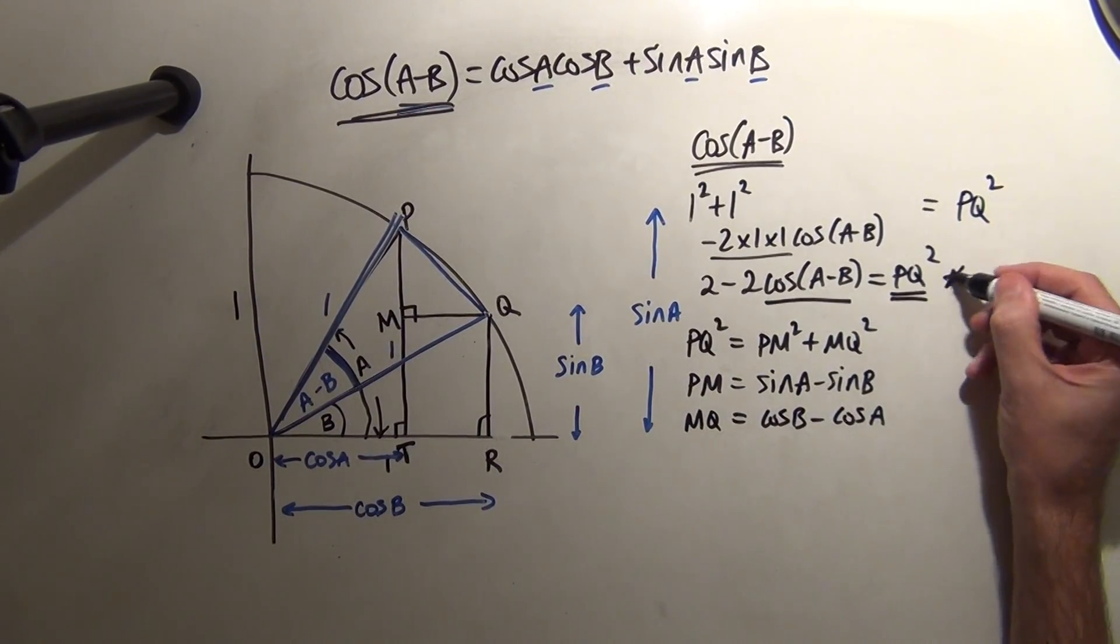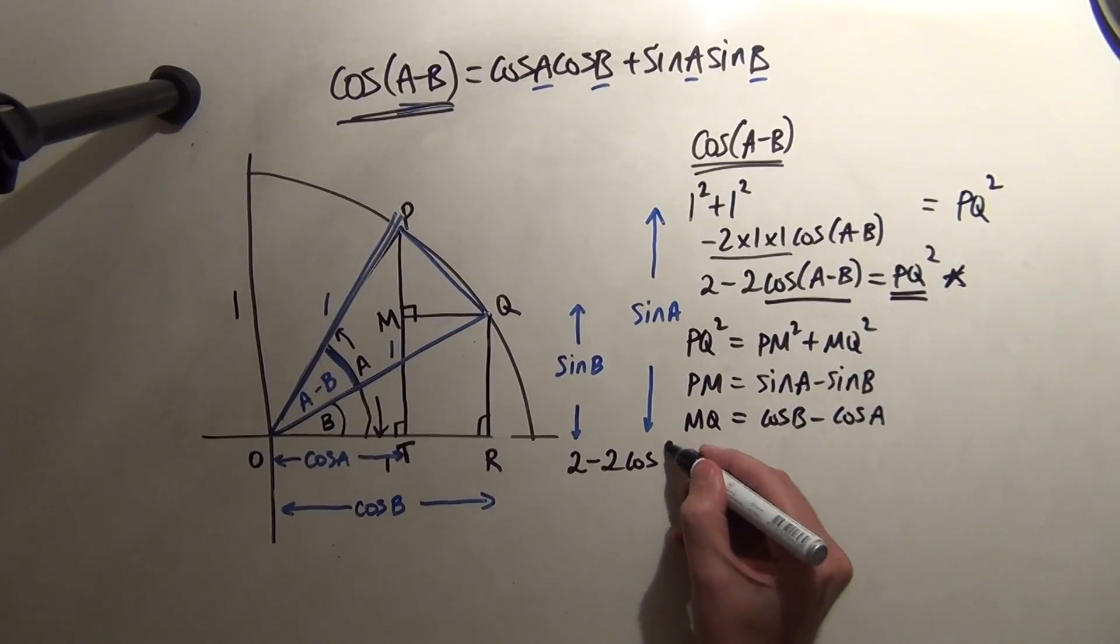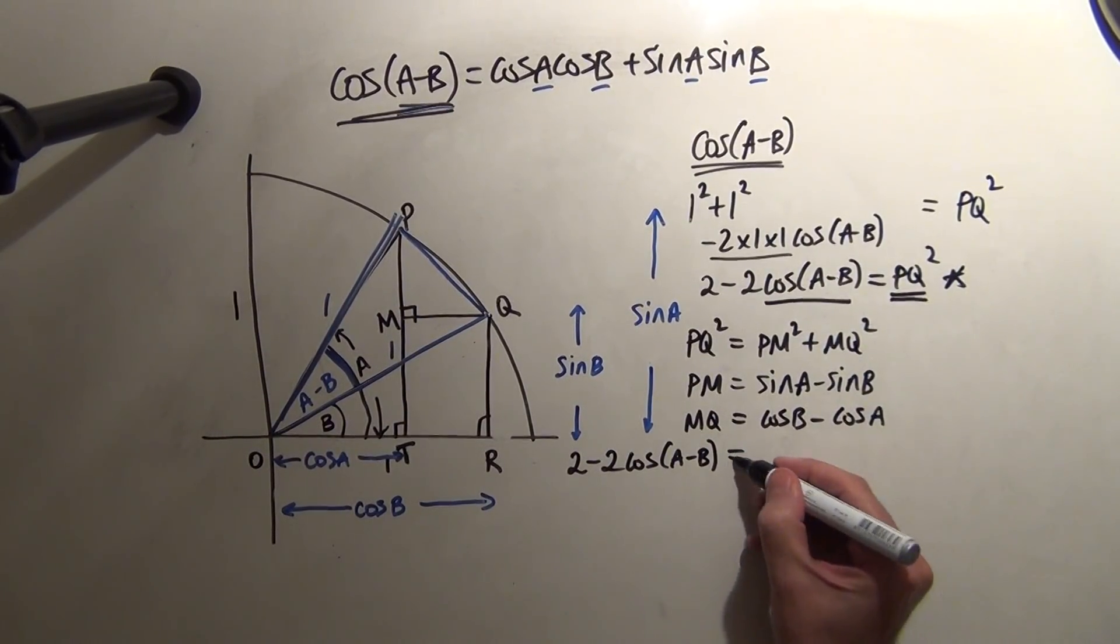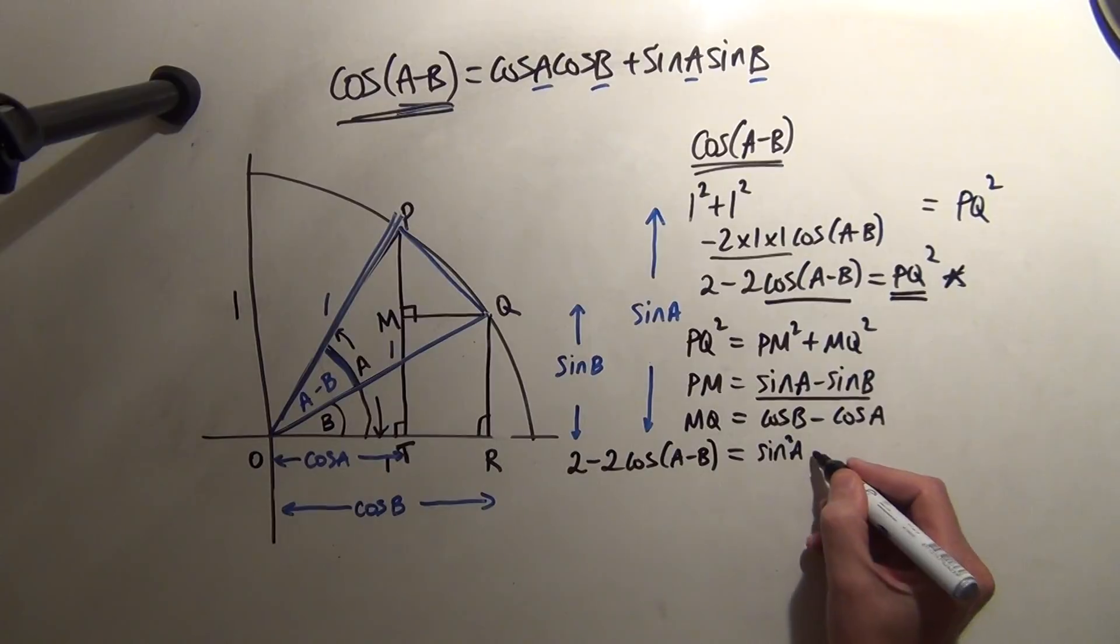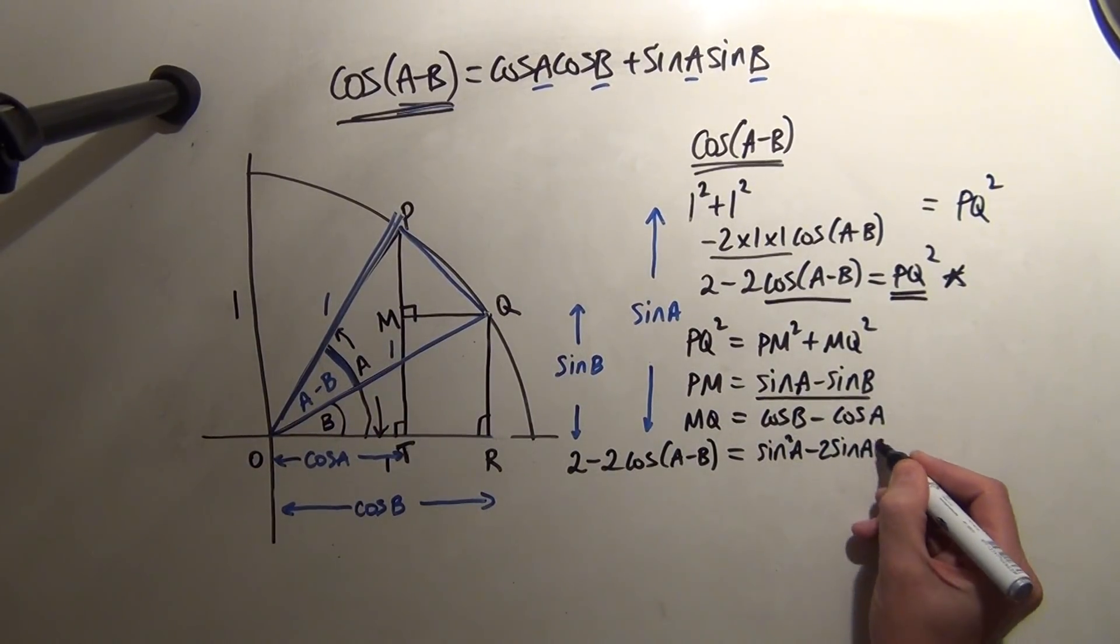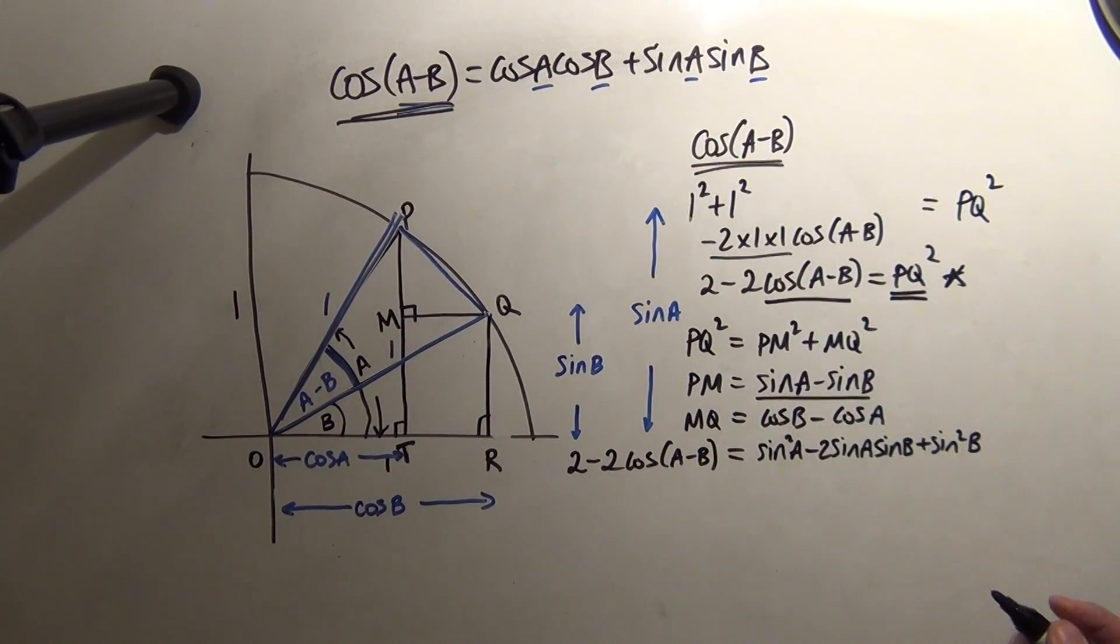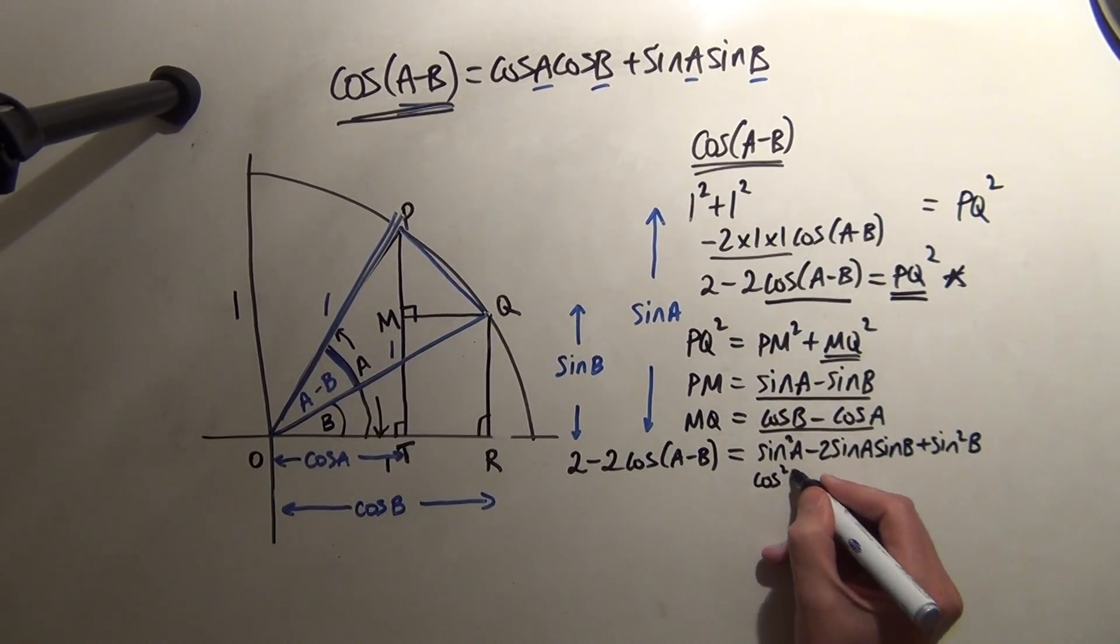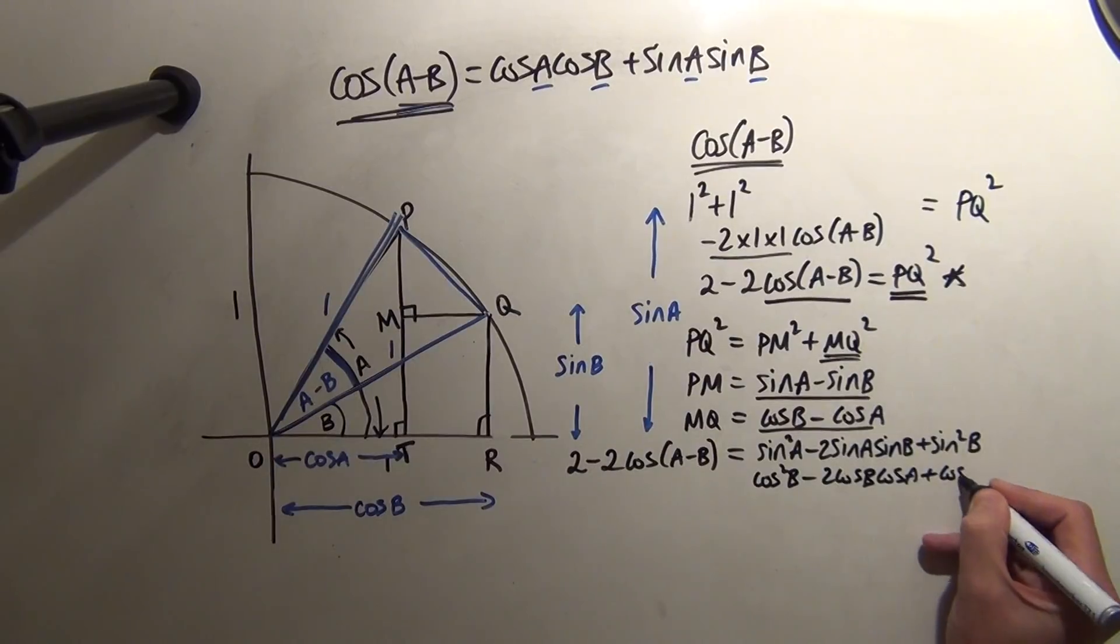Now, I want to go back to here, and I just want to put left-hand side equal to right-hand side. So, I'll do this all in one go, and you should be able to work this out and follow it through. So, I'll have 2 - 2cos(A-B) is PQ squared, which is PM squared, which is sin²A - 2sinAsinB + sin²B plus MQ squared, which is cos²B - 2cosB + cosA + cos²A.